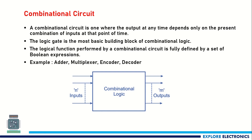Examples of combinational circuits include the half adder, full adder, multiplexer, demultiplexer, encoder, and decoder. One important thing to remember is that a combinational circuit will not have any feedback or memory element.